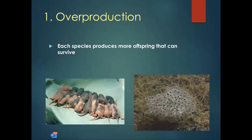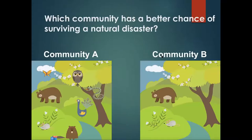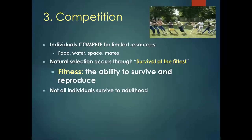Each species produces more offspring than can survive — that's what we mean by overpopulation. Which community has a better chance of surviving a natural disaster? A community with fewer species, or one with a diverse number of living organisms? A diverse community — Community A — would be more likely to survive a natural disaster. Competition: individuals compete for limited resources — food, water, space, and even mates. Natural selection occurs through survival of the fittest, where fitness is the ability to survive and reproduce. Not all individuals survive to adulthood.